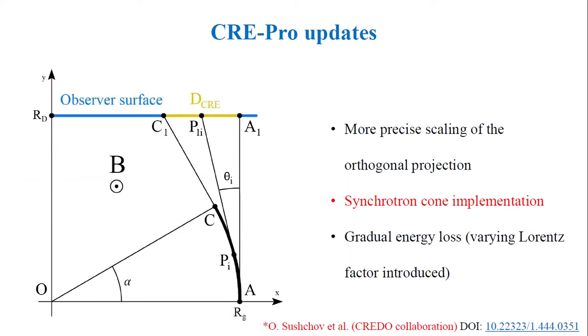What is missing in the initial model was tried to be fixed in the next edition of the code. I introduced more precise scaling of the orthogonal projection. The most important improvement was the implementation of synchrotron cone, because the photons are believed to be distributed within a very narrow cone, depending on the Lorentz factor when the primary particle propagates through the magnetic field. I also introduced gradual energy loss.